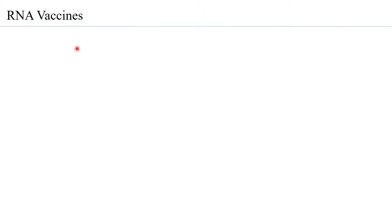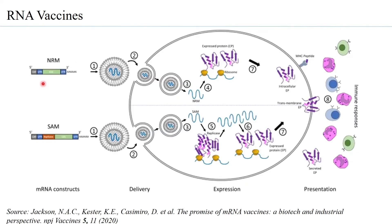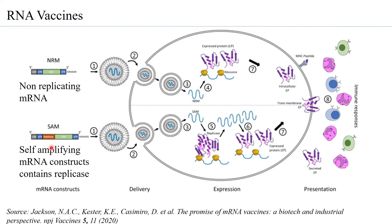RNA vaccines are another type of third generation vaccine. In this case, mRNA itself is introduced into the host cell. There are two types: non-replicating mRNA, which is processed mRNA with a 5' cap, 5' UTR, open reading frame, 3' cap, and poly-A tail; and self-amplifying mRNA, which additionally contains a replicase gene allowing the mRNA to form multiple copies of itself. Both types can be introduced into the cell using lipid nanoparticles — the mRNA is enclosed in a liposome, taken up through endocytosis, and released into the cytoplasm where ribosomes translate it.